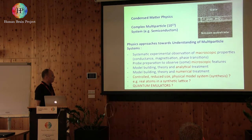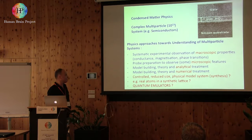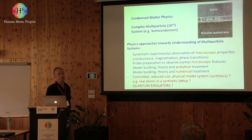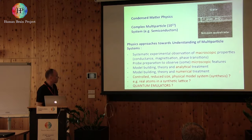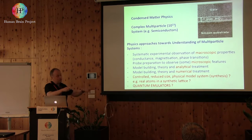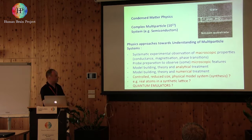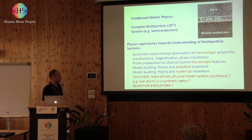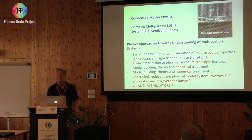There is another way of doing things, following Feynman's idea: build controlled, reduced-size physical model systems — also called quantum emulators. For example, you take real atoms and put them into a synthetic lattice using optical traps. People do exactly that in Innsbruck. You can control the distance of atoms by moving laser beams, control interactions by applying magnetic fields, and watch structure formation. They call these quantum emulators — an exciting complementary setup that can be compared with natural condensed matter systems.